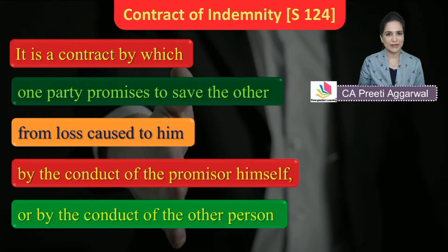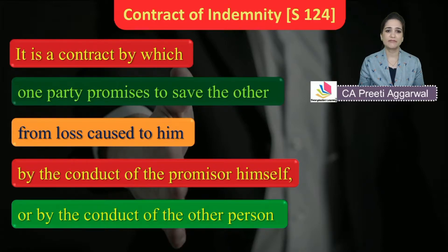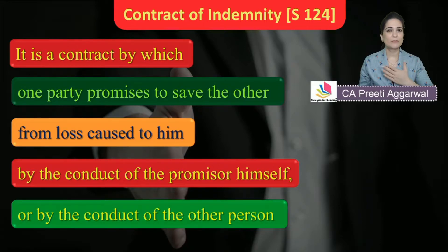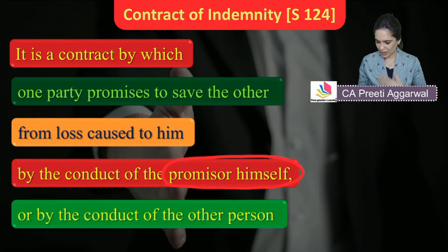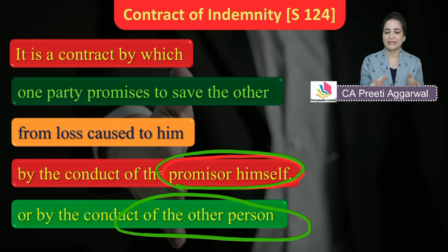One very important question for the exam: are contracts of insurance also contracts of indemnity? If we read the definition of contract of indemnity as given under Section 124, it is a contract by which one party promises to save the other from loss caused to him either by the conduct of the promisor himself or by the conduct of any other person.